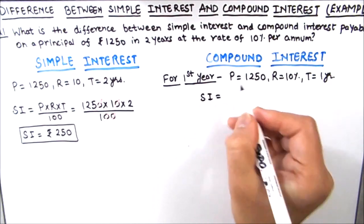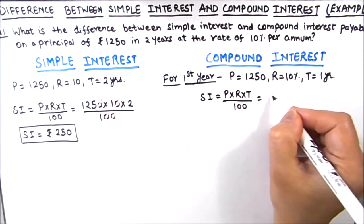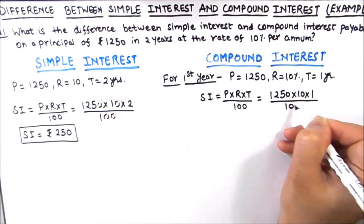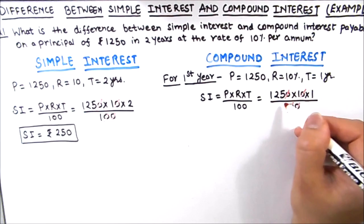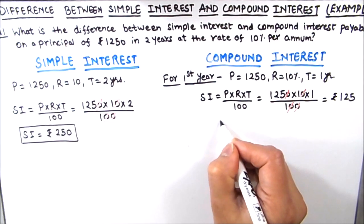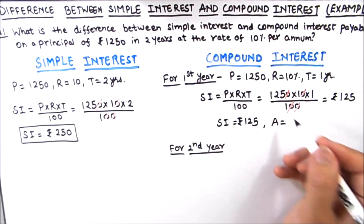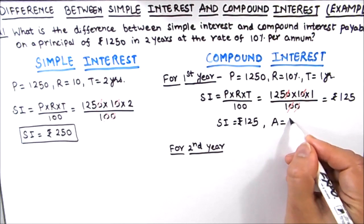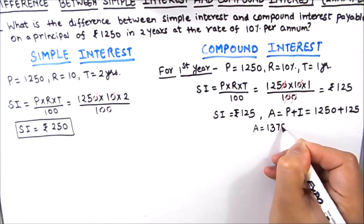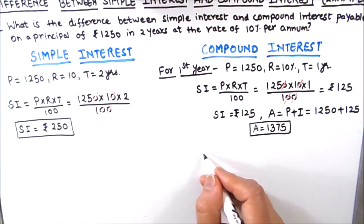Simple interest equals P times R times T divided by 100, which is equal to 1250 times 10 times 1 divided by 100. These two zeros get cancelled with those two zeros, so we are left with rupees 125. This is the simple interest at the end of the first year. Now we find the amount, which will act as the new principal for the second year. The amount comes out to be rupees 1375, and this is our new principal for the second year.